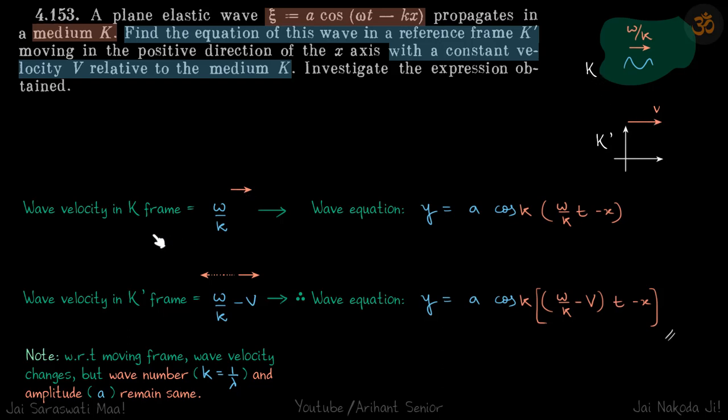Wave velocity in K frame is ω/k, and wave equation is a cos(k(ω/k)t - x) from here. So this indicates the wave velocity.